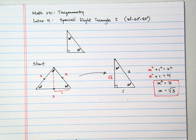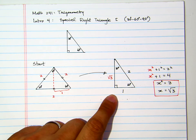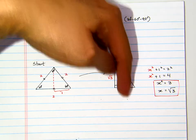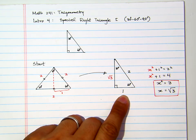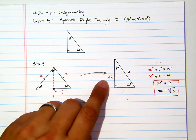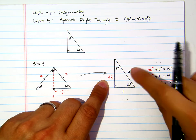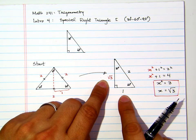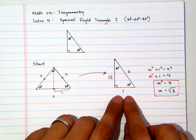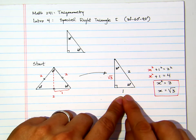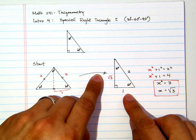What I want you to memorize is the following: if you have this special 30-60-90 degree right triangle, then the ratio of sides will be as follows. The side opposite to 30 degrees is the base — call it one. The side opposite to 60 degrees, or adjacent to 30 degrees, will be radical three. And the hypotenuse will be twice the length of the side opposite to 30 degrees.